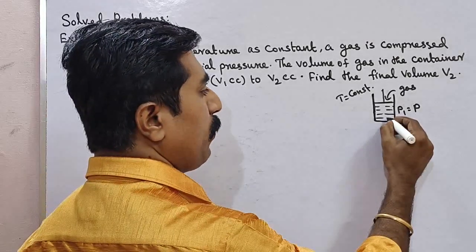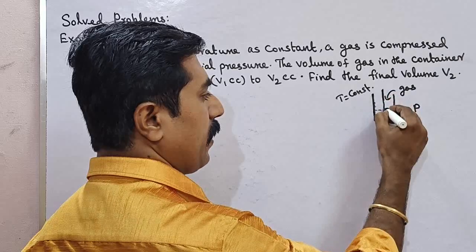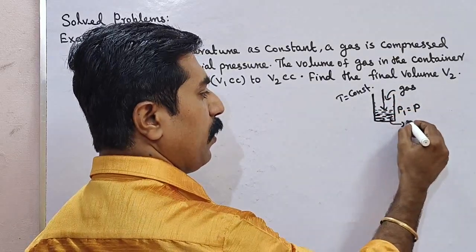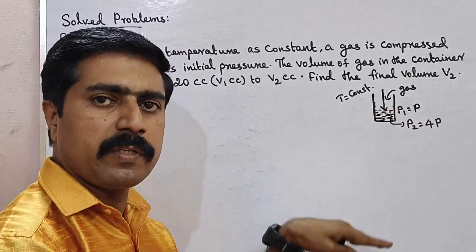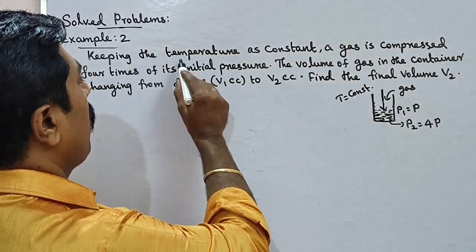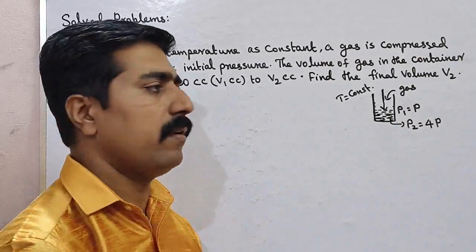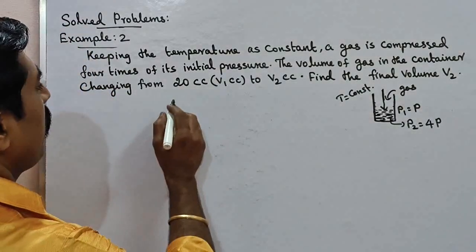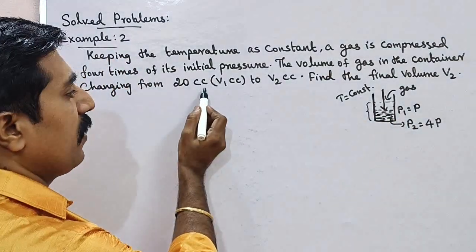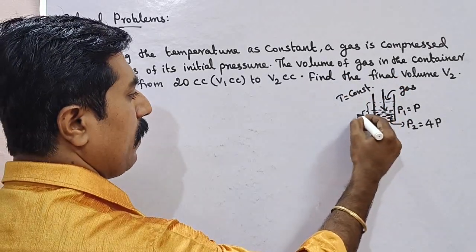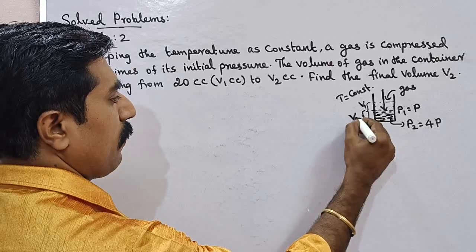The new pressure is equal to 4 times of the initial pressure. Temperature is constant — T1 equals T2. The gas volume is V1, which is 20 cubic centimeters. After compression, the final volume is V2.